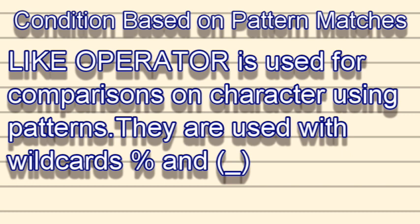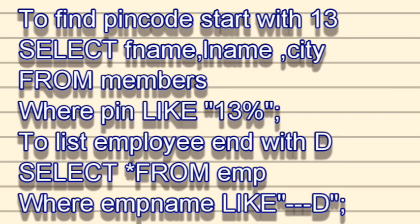An important operator useful when we don't remember exact values or want pattern-based matching is the LIKE operator. LIKE makes comparisons on character strings using patterns, with two wildcards: percent (%) matches any substring, and underscore (_) matches any single character. For example, to find members whose pin code starts with '13': SELECT first_name, last_name, city FROM members WHERE pin LIKE '13%' — this prints all details where the pin starts with 13.